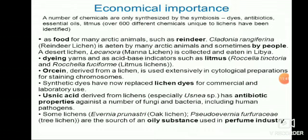Orcin, derived from a lichen, is used extensively in cytological preparations for staining chromosomes. Synthetic dyes have now replaced lichen dyes for commercial and laboratory use, and lichen dyes are biodegradable and eco-friendly. Usnic acid derived from lichens, especially Usnea species, has antibiotic properties against a number of fungi and bacteria including human pathogens. Some lichens such as Evernia prunastri (oak lichen) are a source of oily substances used in the perfume industry.